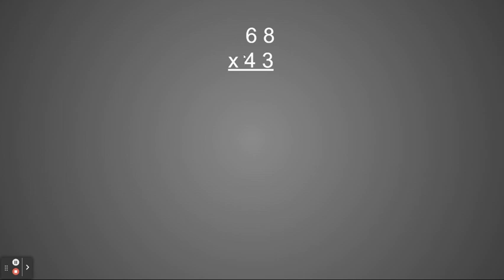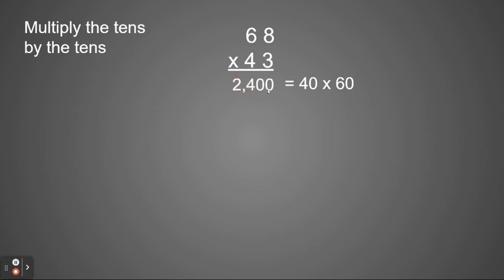We're going to start by multiplying the bottom number through to the top number. So we start multiplying the tens place by the tens place, using the bottom number in tens times the top number in tens. So 40 times 60. 40 times 6, 4 times 6 is 24. So 40 times 60 is 2,400.